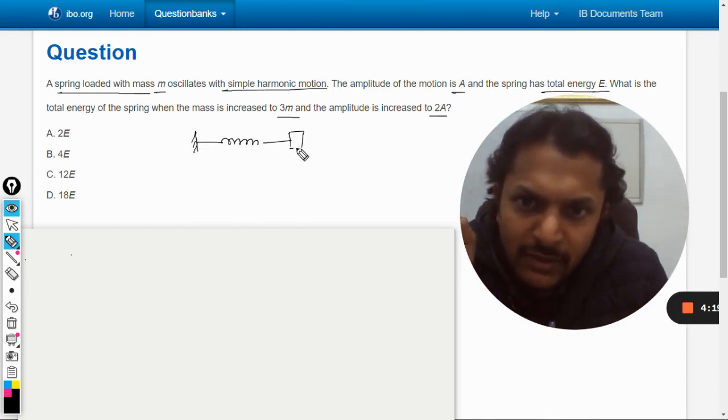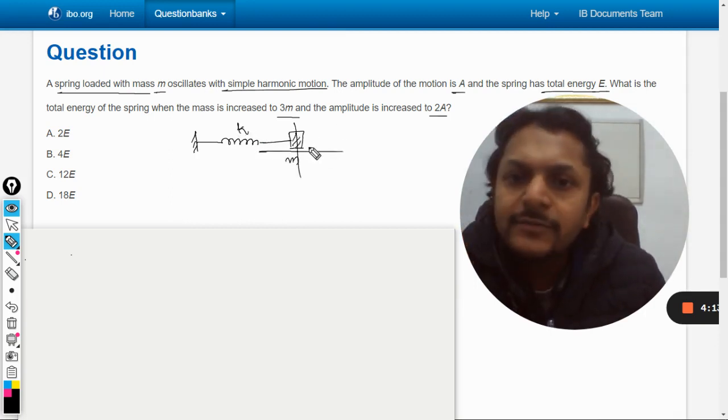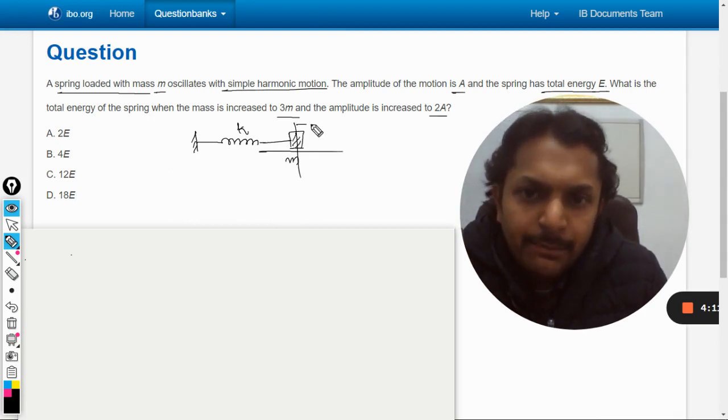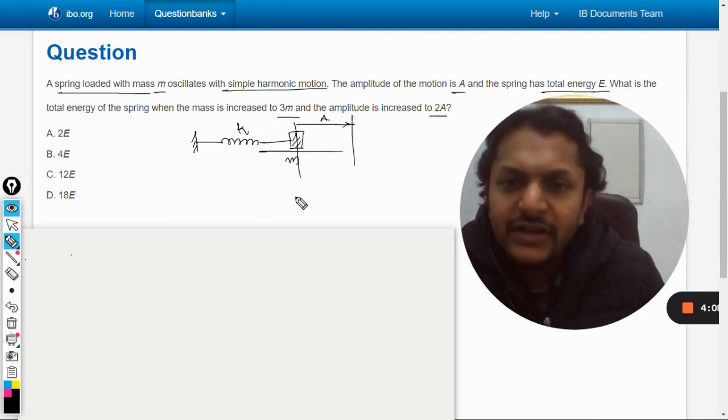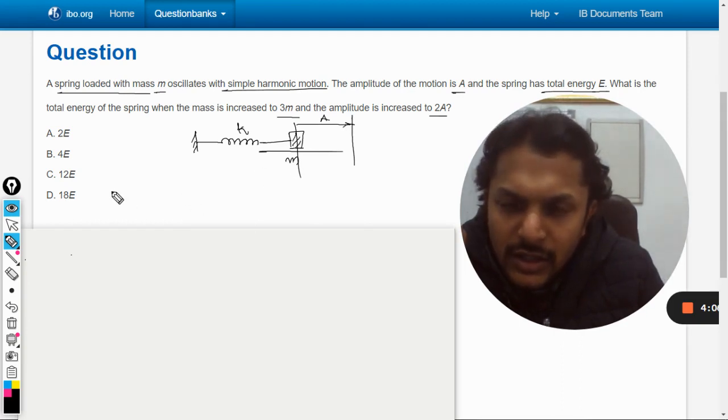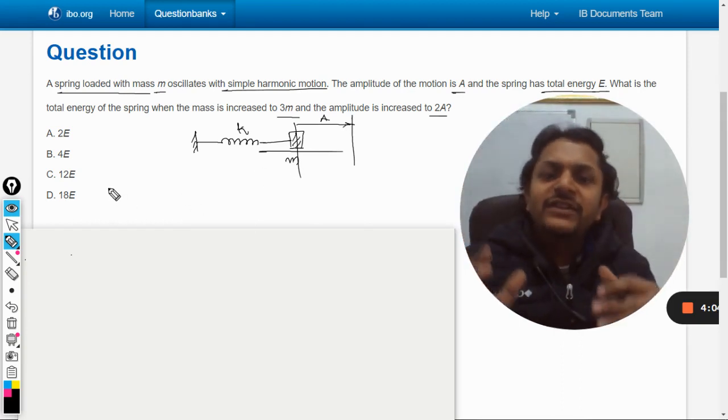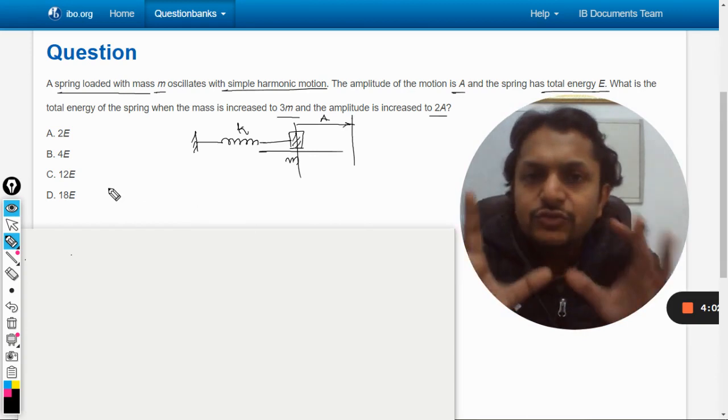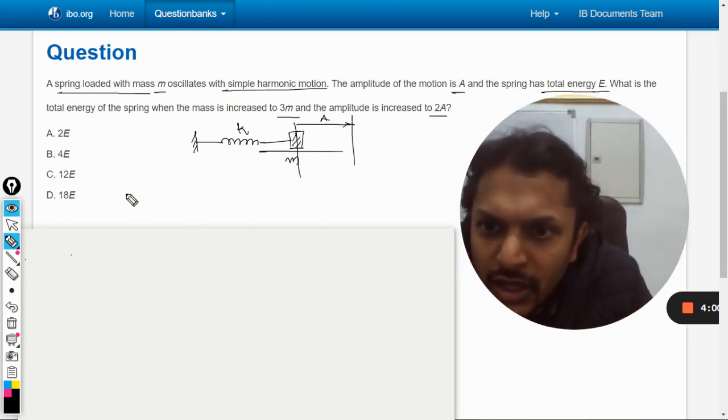There is only this one spring and this one mass here. This is k and this is m, so this body is now moving. The amplitude is given as A. So let us first of all do it, and then I will tell you what is the general mistake that students do in this question.